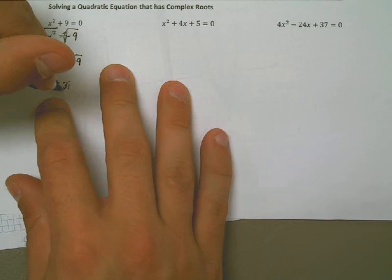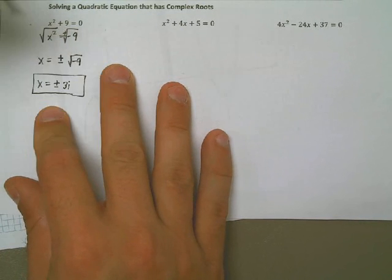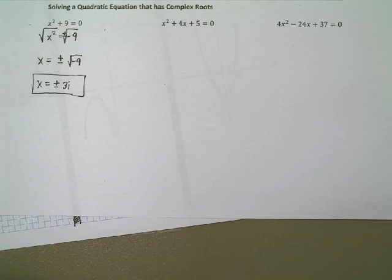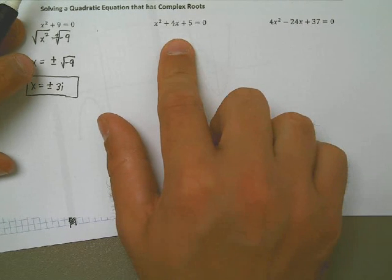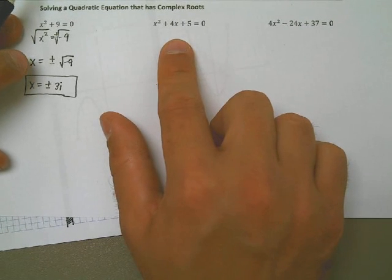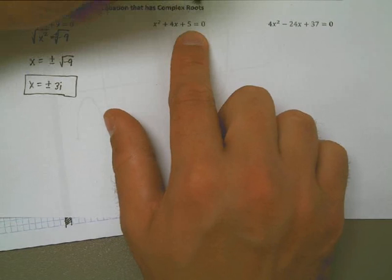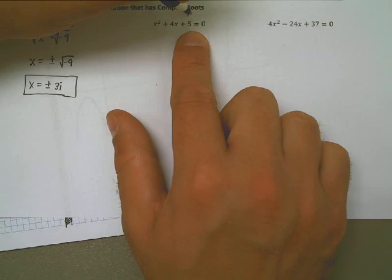Over here, second example, x squared plus 4x plus 5. I think about that for a second. If I want to multiply two numbers to get 5, I've got to have 1 and 5, either both positive or both negative, but they have to add to 4. That's not going to work, is it? So it's not factorable. Let's say on this one, let's say I want to complete the square, just to show it, instead of quadratic formula.